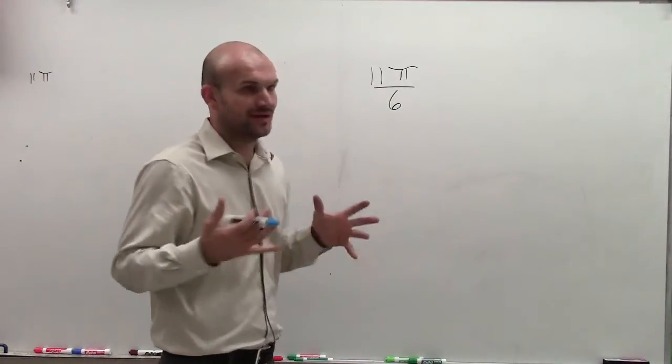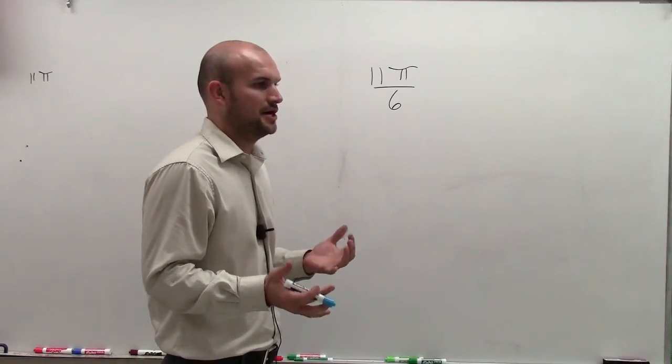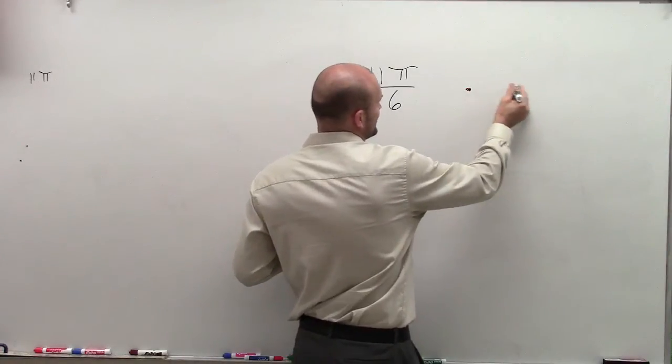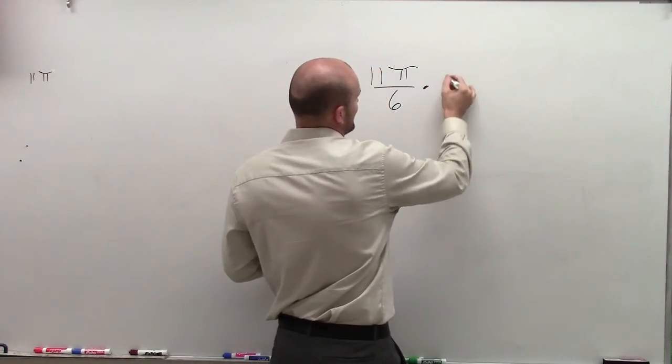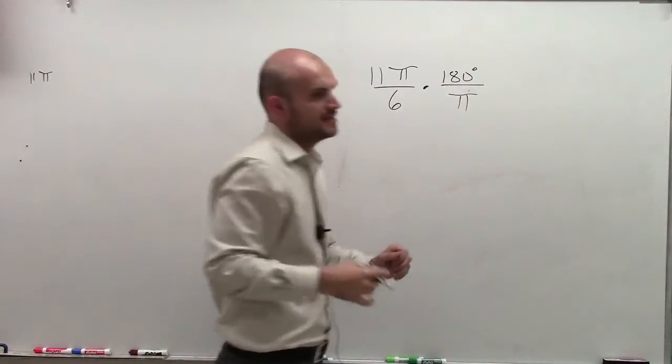So to do that, what I need to do is make sure that I understand the ratio between degrees and radians. The ratio of degrees and radians is 180 degrees is equivalent to π radians.